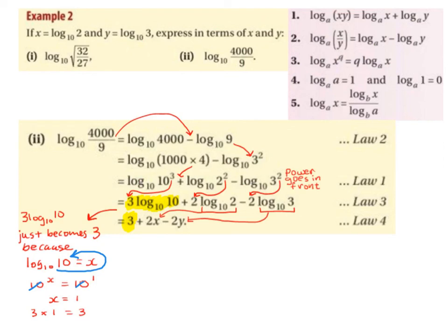We were told in the question that x equals log base 10 of 2, so I bring down the 2 and swap log base 10 of 2 for x, giving 2x. Then bringing down the minus and the 2, and swapping log base 10 of 3 for y. So the final answer in terms of x and y is 3 + 2x − 2y.